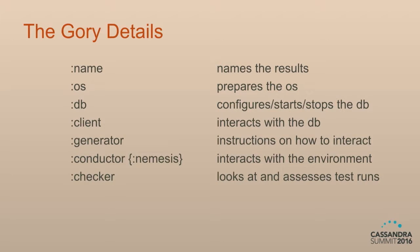Interestingly, we can write new checkers to do new post-hoc analysis without re-running tests. To generate new history you need to re-run, but I can say: I have a new way to look at lightweight transactions — all I need is the list of transactions from my last test run. I write a new checker, find bugs, and show that a bug appeared two months ago without needing to re-run and bisect two months of Cassandra commits. I can just look at the test results for the last two months.